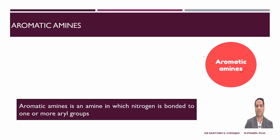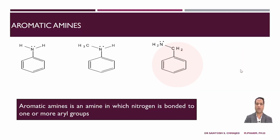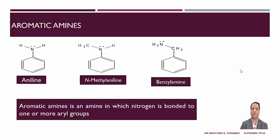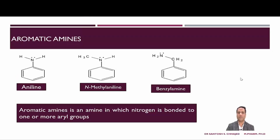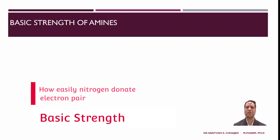Now we will talk about aromatic amines — the name itself is explanatory. Here one or more hydrogens of ammonia are replaced by one or more aryl rings. Just as with aliphatic amines, aromatic amines can also be termed primary, secondary, and tertiary. The simplest aromatic amine is aniline, in which one hydrogen of ammonia is replaced by a phenyl ring. In N-methylaniline, an alkyl group is also linked in addition to the aromatic ring. In benzylamine, although a phenyl ring is present, it is not directly linked to the nitrogen, so it is an example of an aliphatic amine, not an aromatic amine.